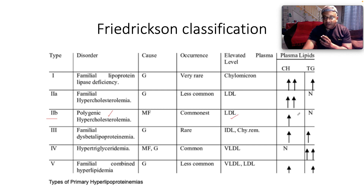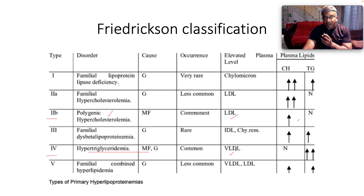For plasma lipids, your chylomicrons may be up but your triglycerides are normal. The next most common one is type 4, which is hypertriglyceridemia, polygenic and multifactorial in etiology. What's implicated here is very low density lipoprotein, and we find your triglycerides are markedly raised. So between type 2b and type 4, those are probably the commonest that we see in clinical practice.